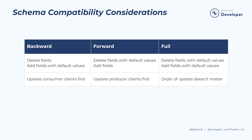To drive this home, here's a table summarizing the compatibility matrix for Schema Registry. With backward compatibility, you can delete fields and add fields with default values, and you'll want to update the consumer clients first. With forward compatibility, you can delete fields with default values and add new fields — you'll want to update your producer clients first. With full compatibility, both deleted or added fields must have a default value. Since every change to the schema has a default, the order in which you update your clients doesn't matter.